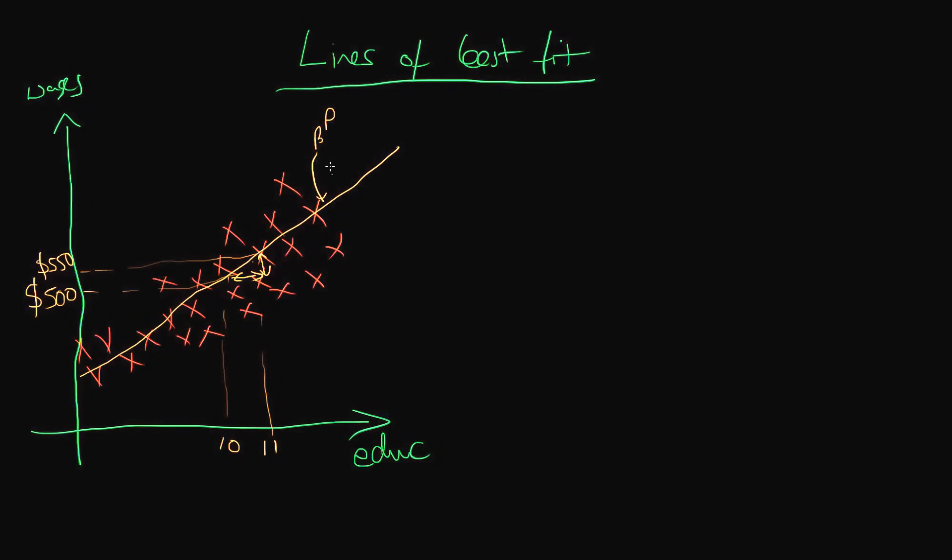I mentioned before that this slope of the line is given by B2P. Well, that's because we originally spoke about there being some sort of linear relationship between wages and years of education within our population. So this is of the form Y equals MX plus C, which is the equation of any general straight line in two-dimensional space. So B2P here represents the M in this above relationship, so it represents the gradient of the line. This is our population process.